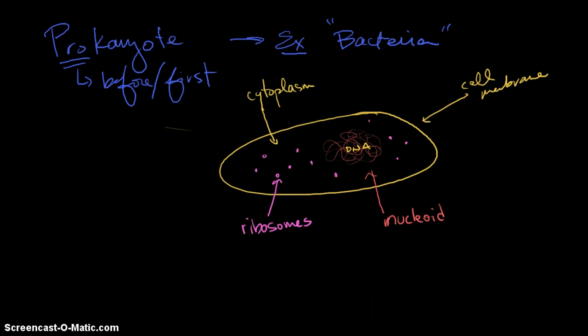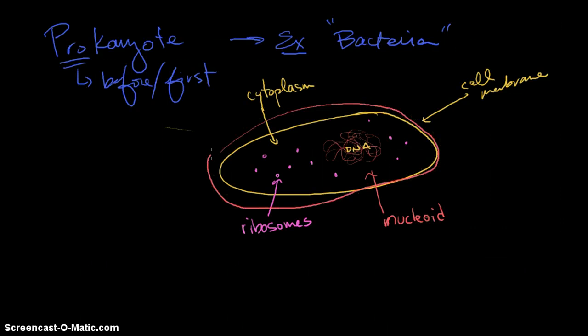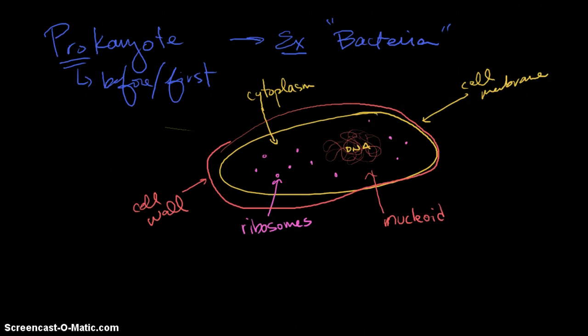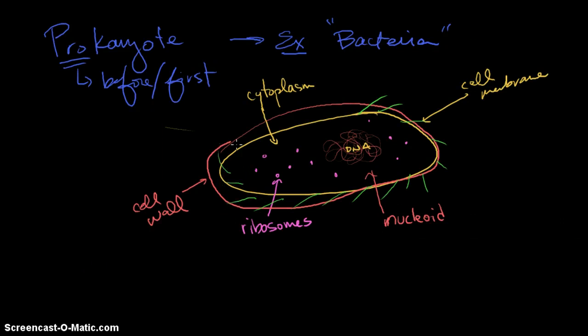Now sometimes, sometimes there is kind of a cell wall around the bacteria. Sometimes, not all the time. And sometimes, there are little hairs which are called, one of them is called a cilium.